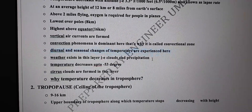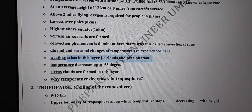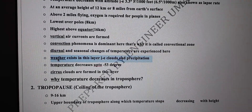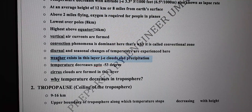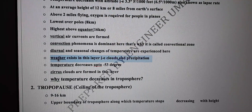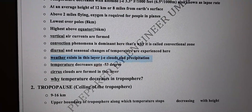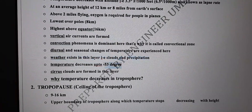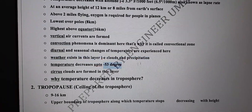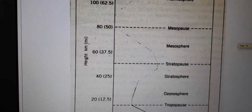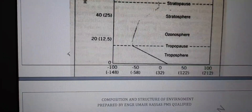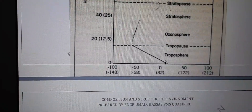Weather exists in this layer. Weather means clouds and precipitation — the phenomenon of rain and clouds is observed in this layer. Temperature here goes down to minus 53 degrees centigrade.